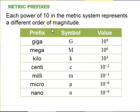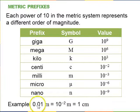Prefixes. So, each power of 10 in this SI metric system represents a different order of magnitude. So, capital G stands for giga, 10 to the 9. Capital M stands for mega, 10 to the 6, so million. Kilo means a thousand, centi means a hundredth, milli means a thousandth, micro is a millionth, and nano is a billionth. So, for example, instead of writing 0.01 meters, you could write that as 10 to the minus 2 meters or just 1 centimeter.